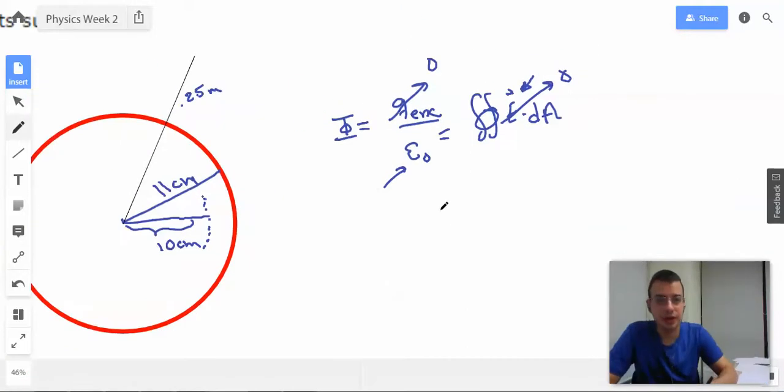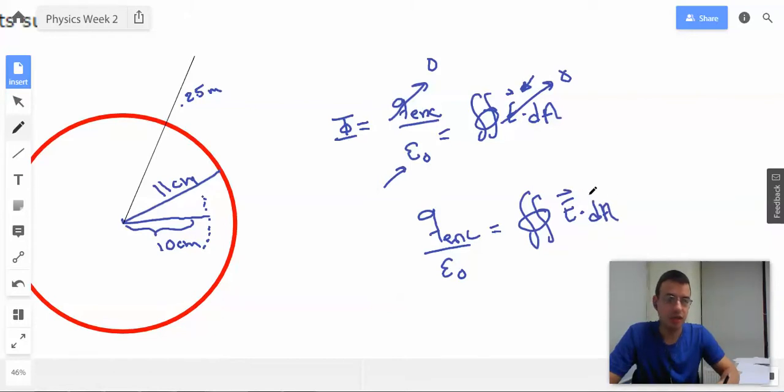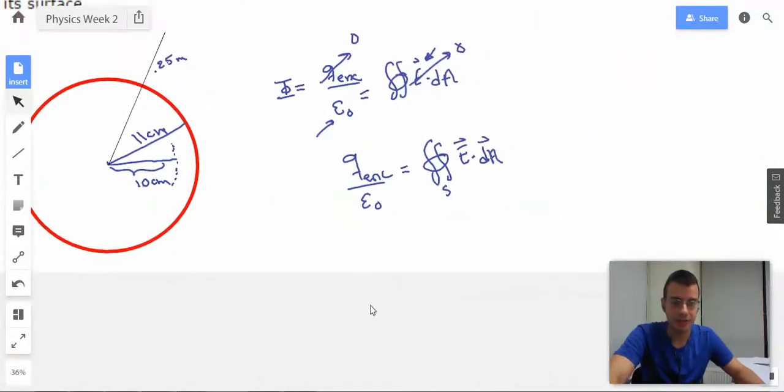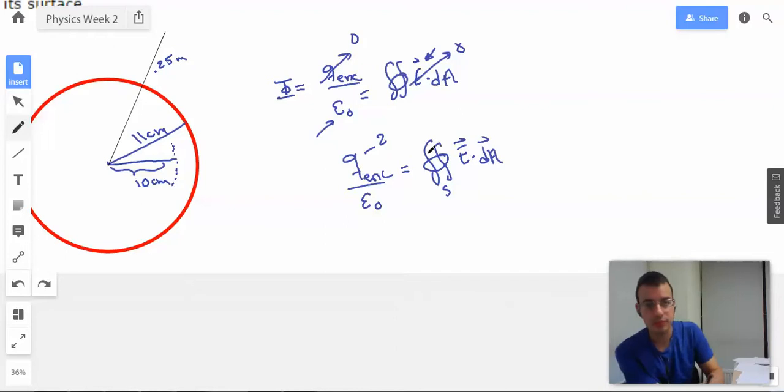This time, we're going to have Q enclosed over epsilon naught equals double surface integral of the electric field times dA, a small amount of surface area. The electric field is going to be pointing outward, radially. 29.5 microcombs, which means it's positive. We know the radius r is going to be 0.25 meters.